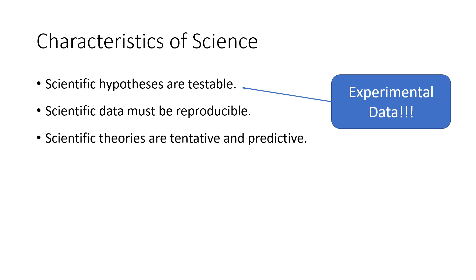Another characteristic is that scientific theories are tentative and predictive. We can never fully prove a scientific theory — we can disprove them, but never fully prove them. These theories are our best descriptions of what's going on based on the data we have available. As more data become available, our theories will evolve.